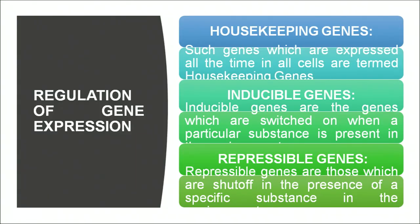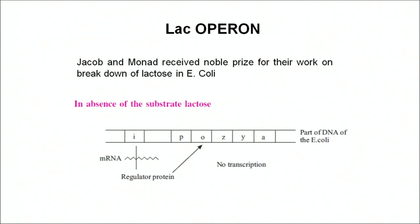Once proteins are made, not all proteins are required all the time in the cell. So how does regulation of gene expression take place? Genes can be categorized into different types: housekeeping genes — expressed all the time in all cells; inducible genes — switched on when a particular substrate is present; and repressible genes — shut off in the presence of a specific substrate. To understand inducible genes, we will study the lac operon.